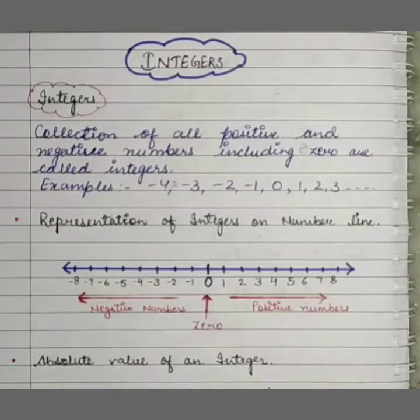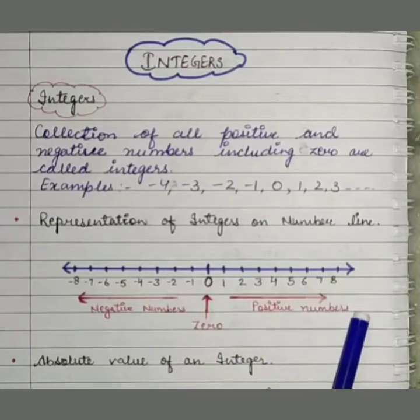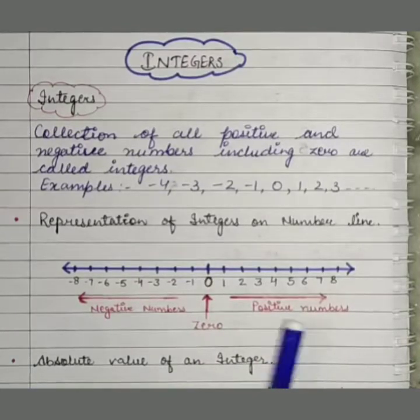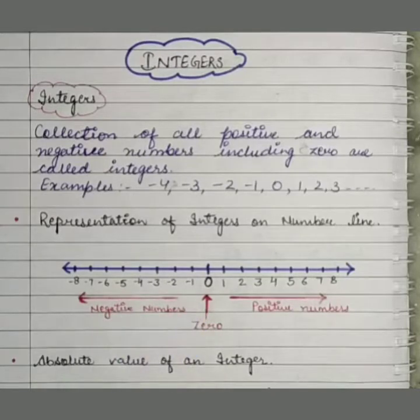0 will remain as it is. On the right hand side of 0 will be positive numbers and on the left hand side of 0 will be negative numbers.